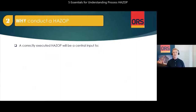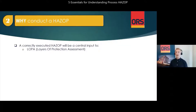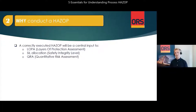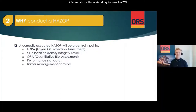Ensure that the application of safety barriers is such that the hazards are properly eliminated or mitigated. We also conduct a HAZOP to identify deviations from related standards and project requirements and identify design improvements. In addition, a correctly executed HAZOP will be a central input to LOPA — layers of protection assessment — SIL allocation to establish the safety integrity level, QRAs — quantitative risk assessments — performance standards, barrier management activities, and maintenance strategies.